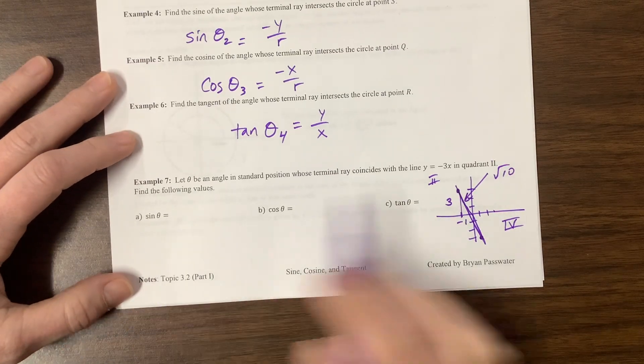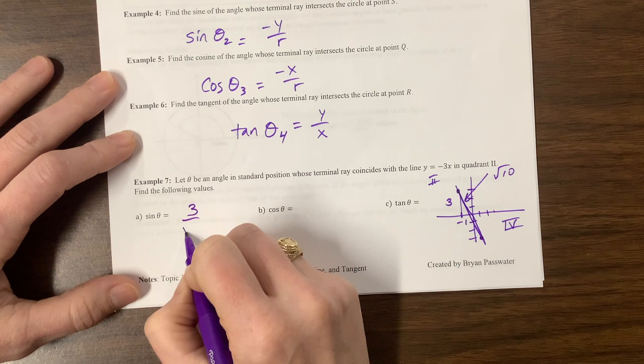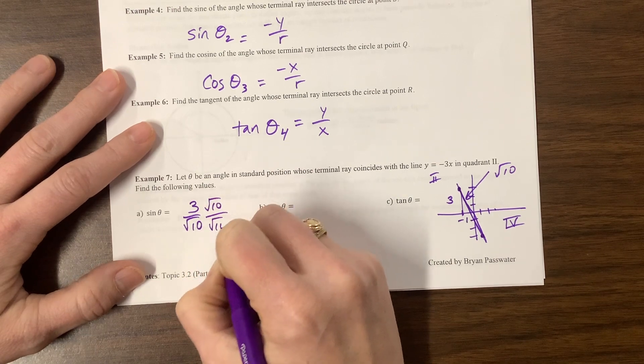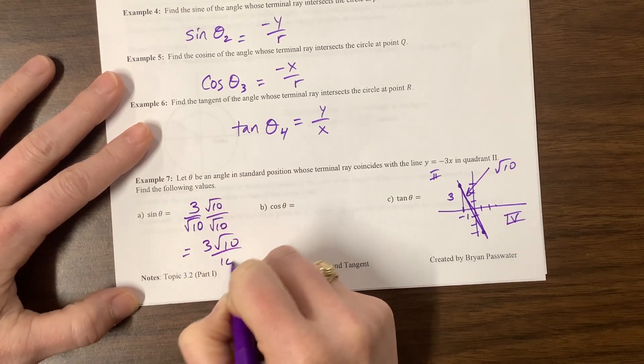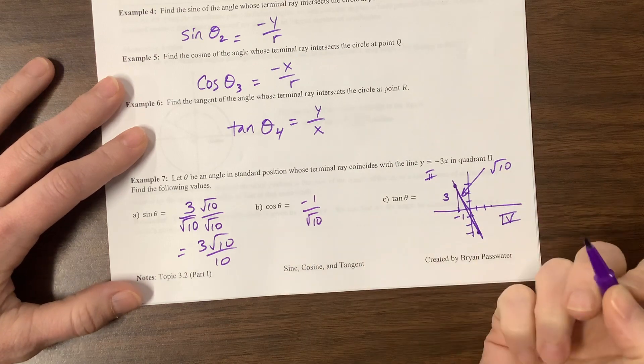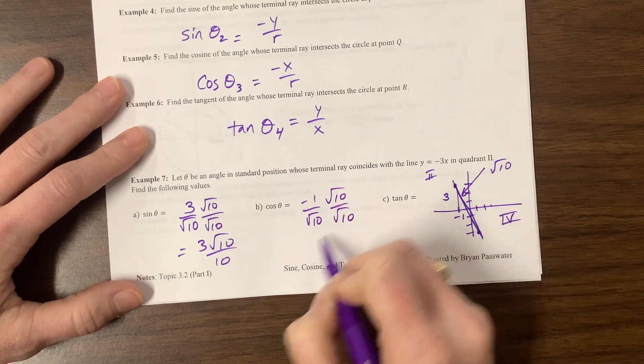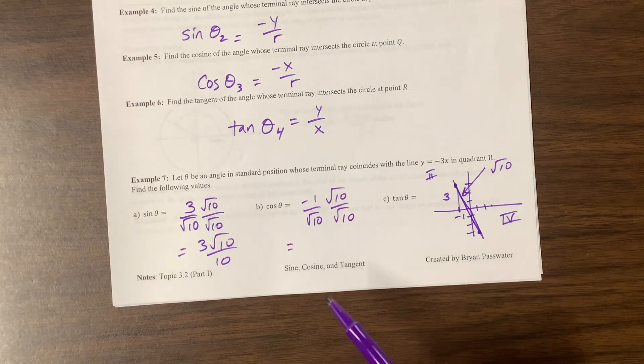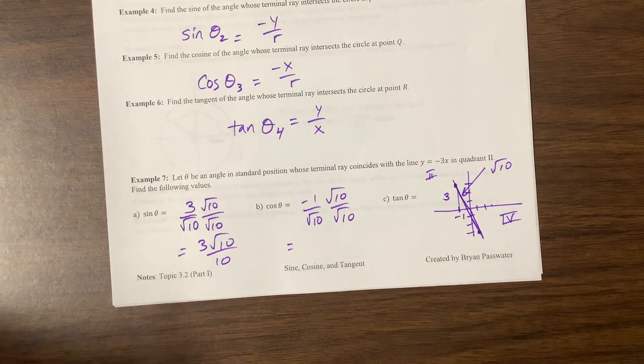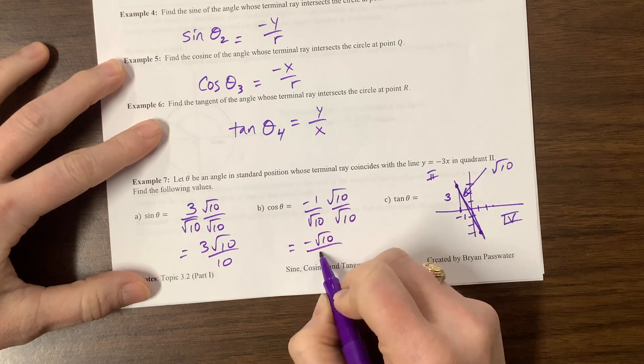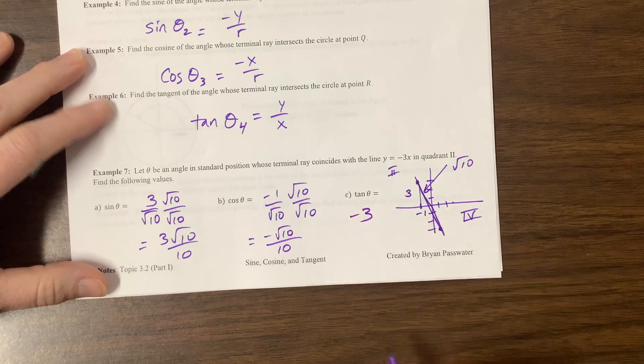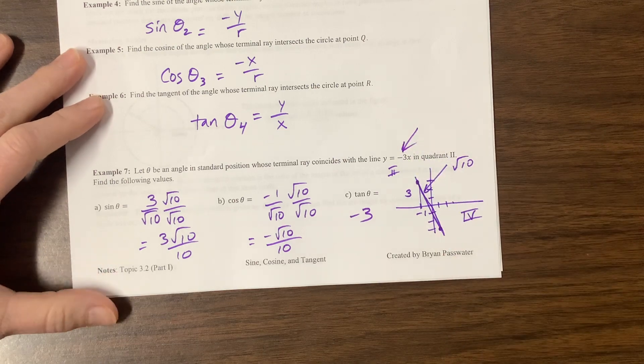So sine of theta is going to be opposite over, so three over root ten. I would probably not make my kids rationalize that if that were up to me. But I think AP will ask you to rationalize. So this is three root ten over ten. Cosine is going to be the negative one over root ten. So I would be happy with that answer, but they didn't ask me. I just don't, anyway, I don't want to rationalize them because then when we go to find secant, cosecant, cotangent, then you have to flip them over and then rationalize it again, and it's just not beneficial in my opinion, but that's fine. Tangent is going to be opposite over adjacent, so that's negative three. It's also the slope of the line. So notice here we have the slope of the line.